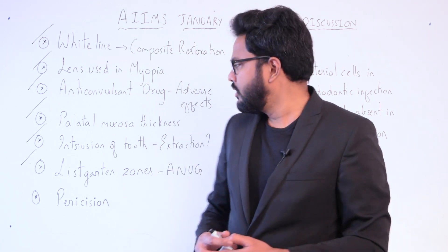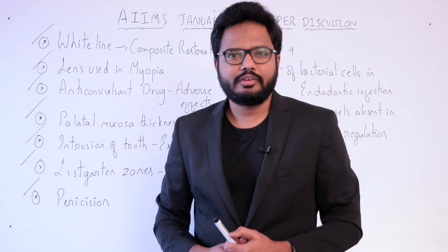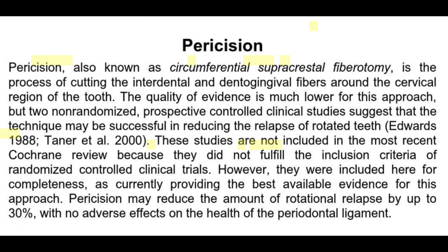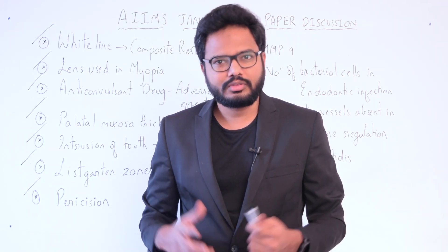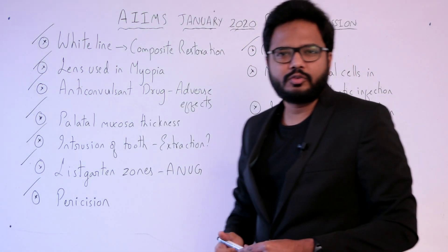Pericision reduces relapse of rotation: according to Evidence-Based Orthodontics edited by Huang, pericision may reduce the amount of rotation relapse by up to 30%, with no adverse effects on the health of the periodontal ligament.